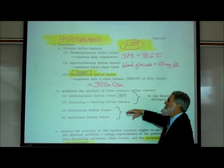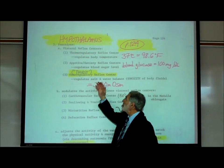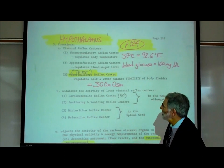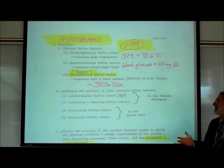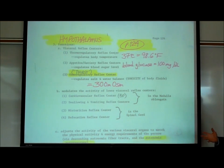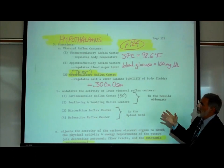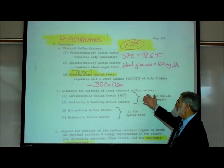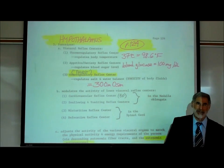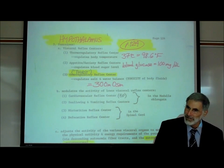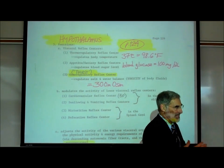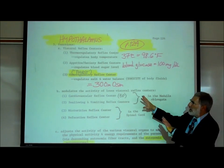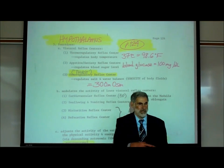Also in the hypothalamus is a thirst reflex center, more properly called the osmoregulatory reflex center. Its job is to maintain the tonicity of our body fluids at 300 milliosmolar — that's called isotonic. We're going to talk more about this center very shortly.